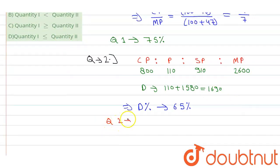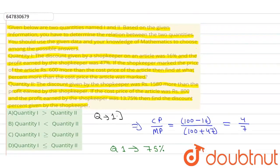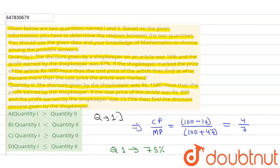Quantity II is 65 percent, Quantity I is 75 percent. So which is greater? Quantity I is greater. Now matching with our options, option number 1 - Quantity I is greater than Quantity II - will be the right answer. Thank you so much guys, see you with a new question.